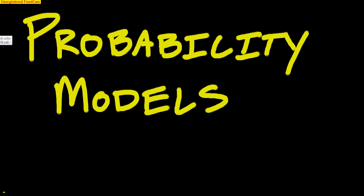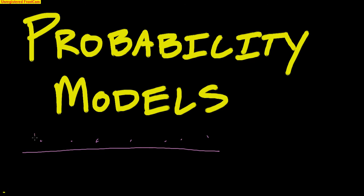This is another midterm review video to help you get ready for probability models. A probability model is basically a model, chart, or diagram that shows everything that can happen, with the probability of each outcome listed next to or underneath each option. So these are your options for what could happen, and then you must calculate the probability of all of those outcomes.